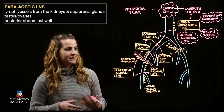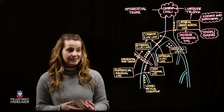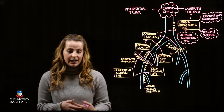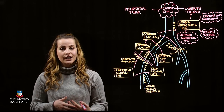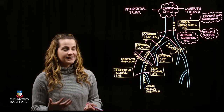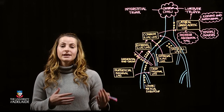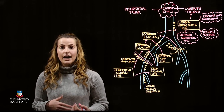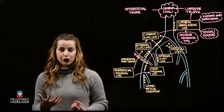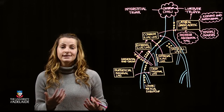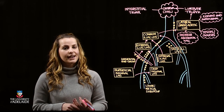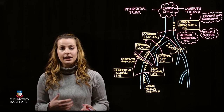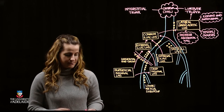While we're here, although this will be discussed in subsequent videos covering the GIT, be aware that just medial to the para-aortic lymph nodes, we have another major lymph group — or series of groups — which are going to help form the interstitial trunk. These are called the pre-aortic nodes.